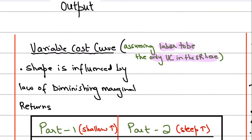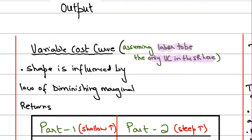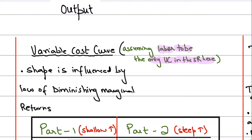As you increase output, the variable cost rises — we all know that. The more output you produce, the more variable cost will rise. Obviously you need more raw materials and more labor. Assuming labor is the only variable cost, when you increase output you need to hire more workers and pay them more. So variable cost will rise — but it's not that simple, because the shape of the variable cost curve matters.